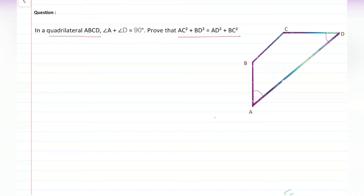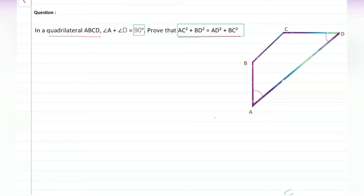First, how should you see and solve this question? If you look at it, you have 90 degrees here and you have several squared terms. So the key theorem you will need is the Pythagorean theorem, because we have right angle triangles involved. I will revise it quickly and show how to use it in this question.